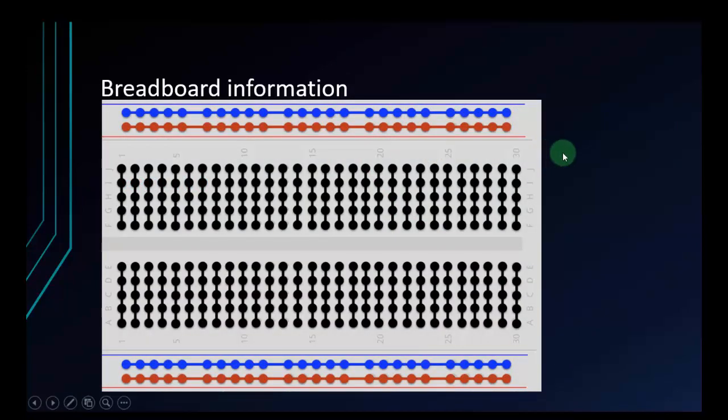This is a breadboard which helps you practice and test a circuit. Look at the yellow box - the number of columns are marked from 1 to 30. This is the column above and this is the column below. They are different from each other.